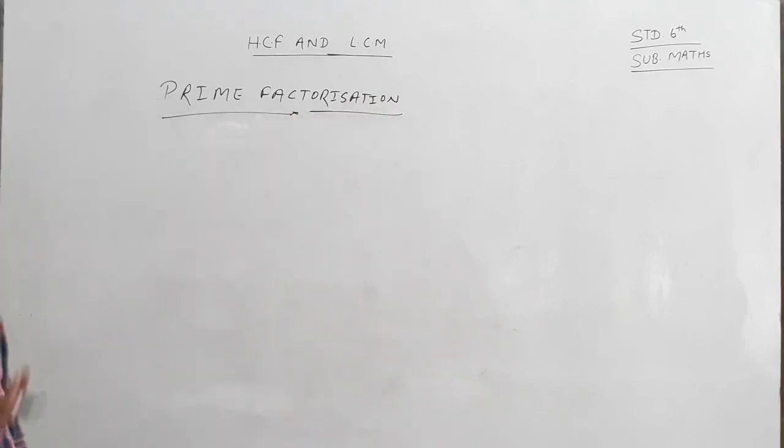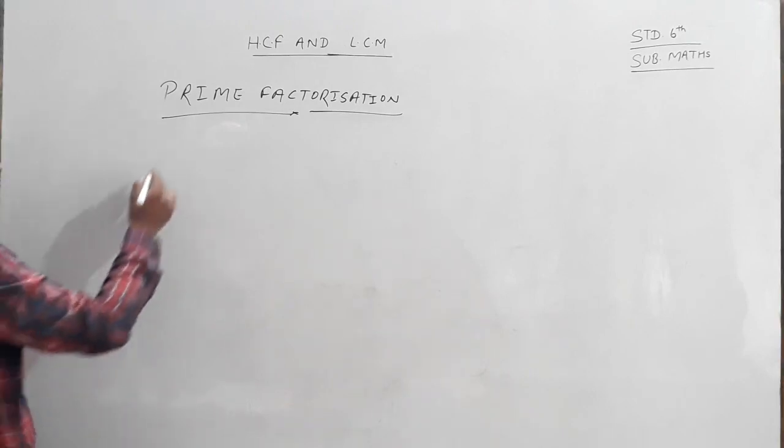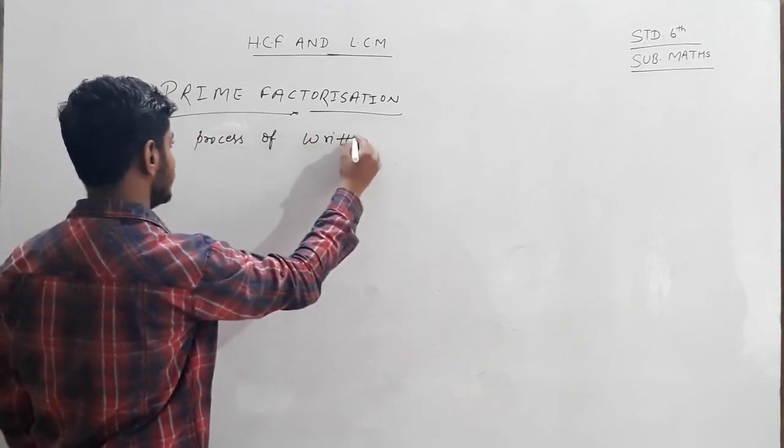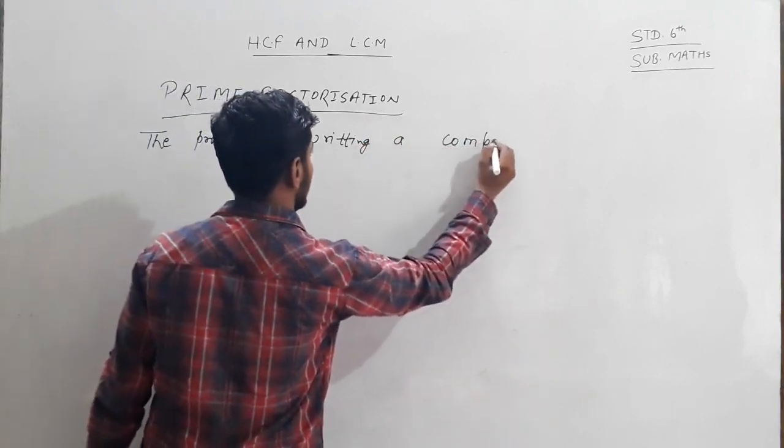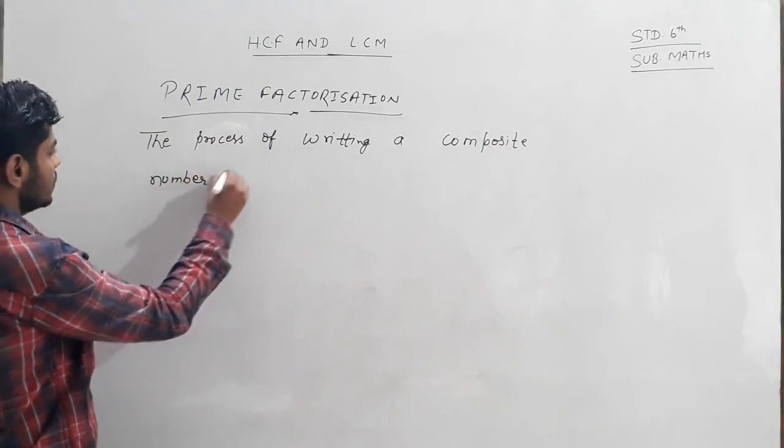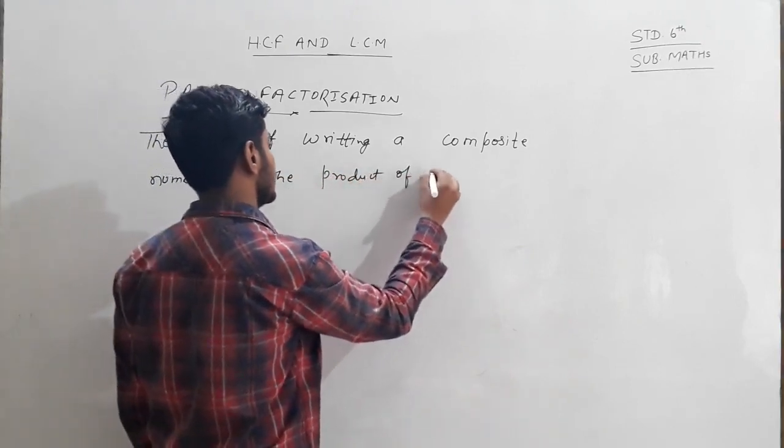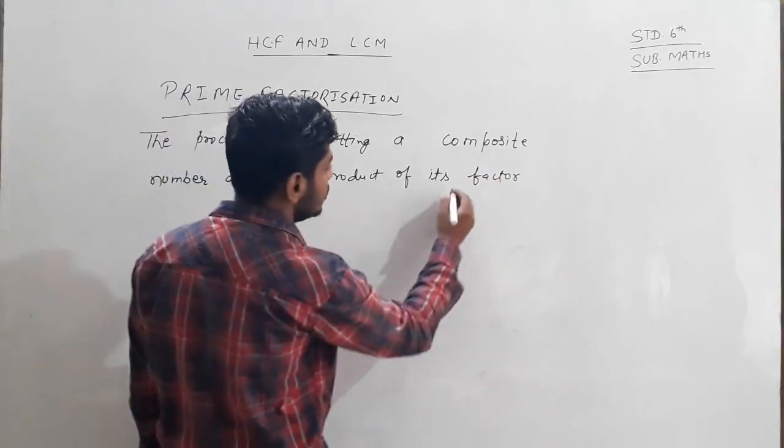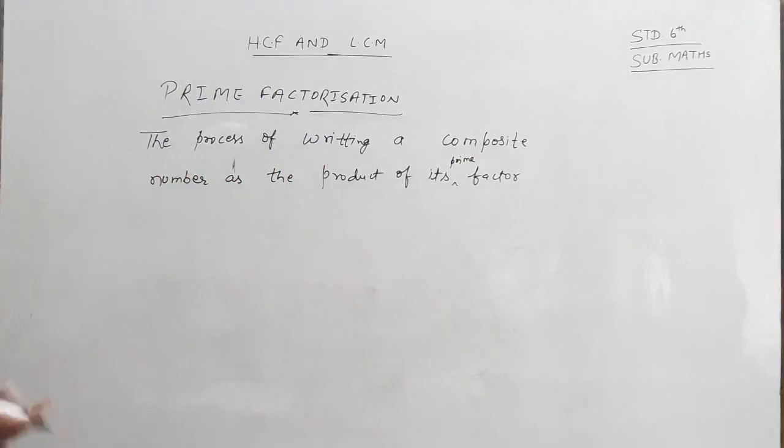Prime factorization is the process of writing a composite number as the product of its prime factors. The process of writing the composite number as the product of its prime factors is called prime factorization.